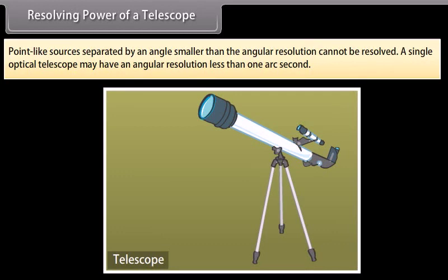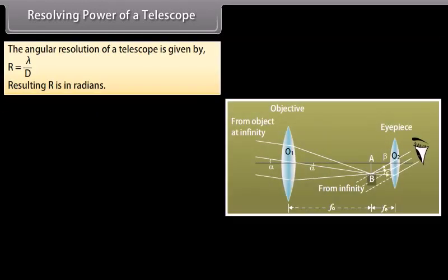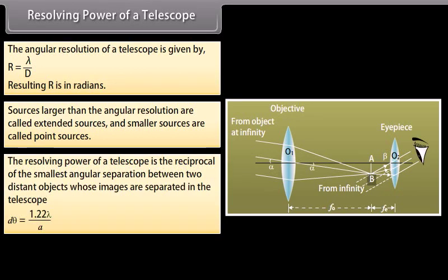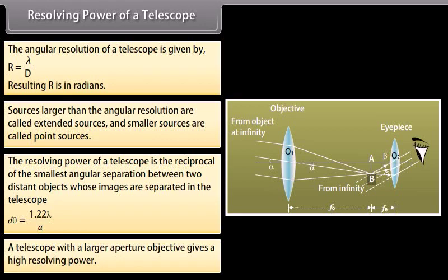Resolving power of a telescope: point-like sources separated by an angle smaller than the angular resolution cannot be resolved. A single optical telescope may have an angular resolution less than 1 arc second. The angular resolution is given by R = λ/D, where λ is the wavelength of the observed radiation and D is the diameter of the telescope's objective; R is in radians. Sources larger than the angular resolution are called extended sources and smaller sources are called point sources. The resolving power of a telescope is the reciprocal of the smallest angular separation between two distant objects: Δθ = 1.22λ/D. A telescope with a larger aperture objective gives a higher resolving power.